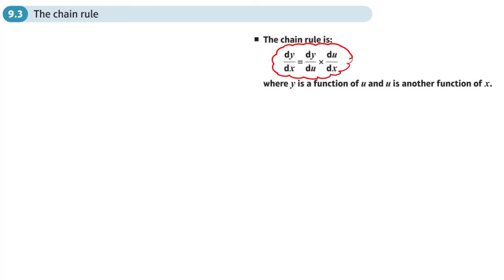Let's say, for example, I had y equals (4x minus 2) to the power 9, and I want to differentiate that. One way would be to expand the brackets, but I don't really want to write out nine sets of brackets. There is another way — substitution. I'm going to let u equal 4x minus 2.